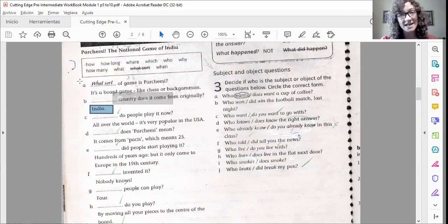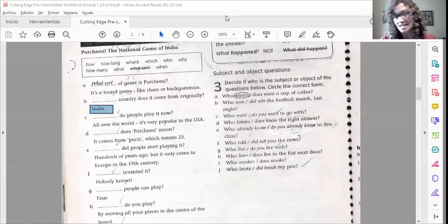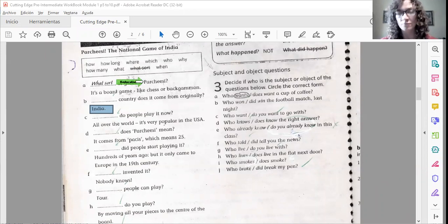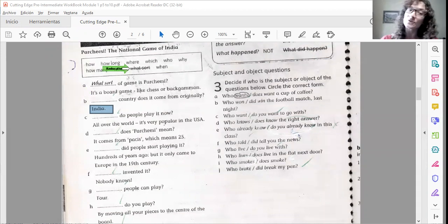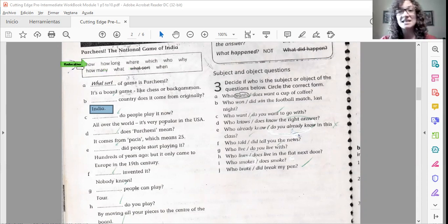Here we've got a picture of the Parchesi and we have a number of questions which don't have the question word. We have to place the correct question word from this box to each one of these questions. How do we know which question word is suitable? Because of the question itself and because we've got the answer. So for example, letter A, it's an example. What sort of game is Parchesi? The answer is it's a board game. You can only use once each question word. So I recommend you now to stop the video to try to complete the question words and then continue.